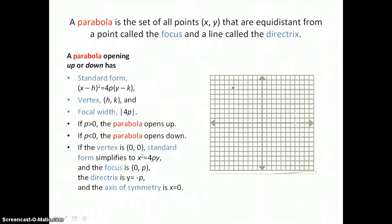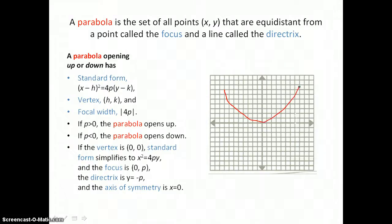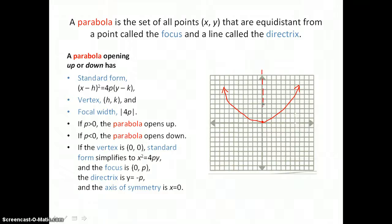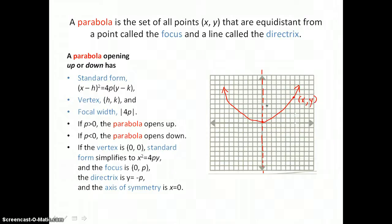Let's draw a parabola and talk about all of its parts. Here's a parabola whose vertex is the origin and it's opening up. Its axis of symmetry divides the parabola into two equal pieces. By definition, any point x, y on this parabola is an equal distance from a point called the focus, located inside the parabola, and a line called the directrix, which is located outside the parabola. The directrix is perpendicular to the axis of symmetry.